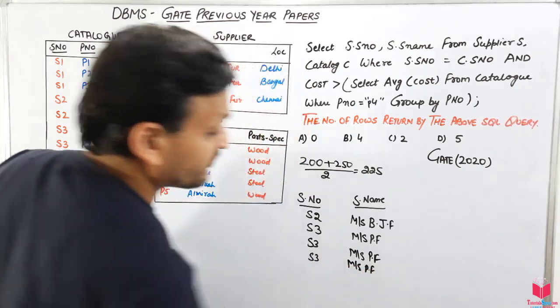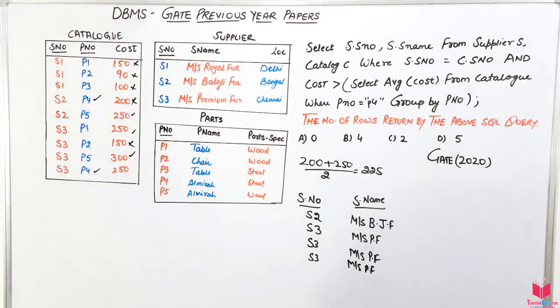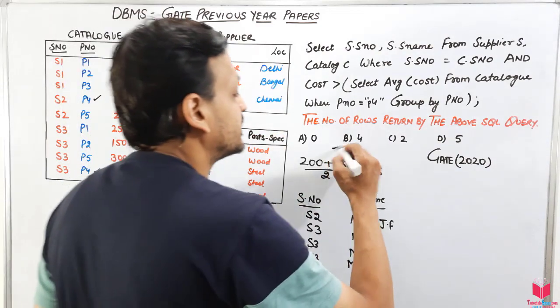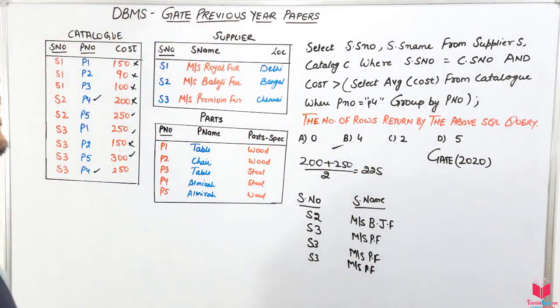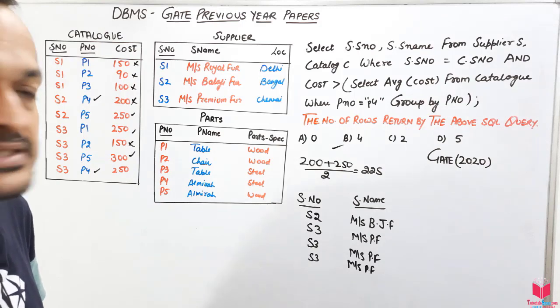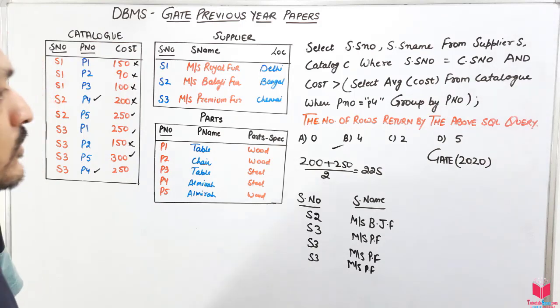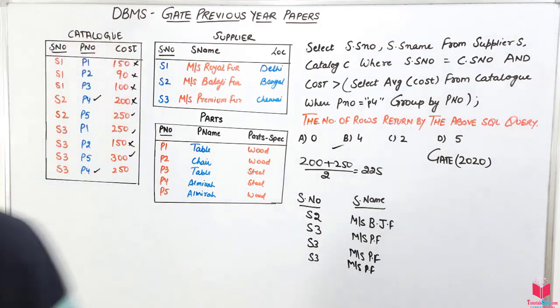These four rows are returned by this query, and the answer is option B. This is a two-mark question in GATE. That's all about how to solve this question. Let's move to the next question.